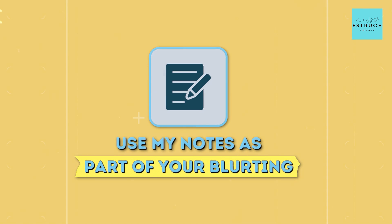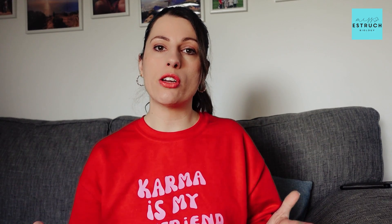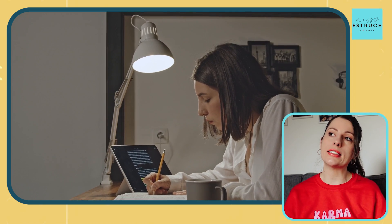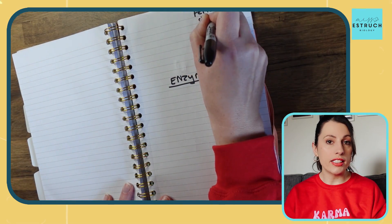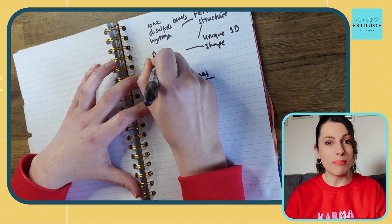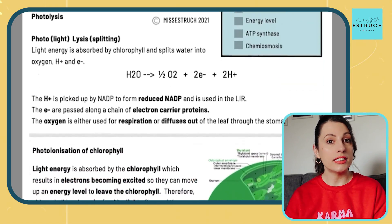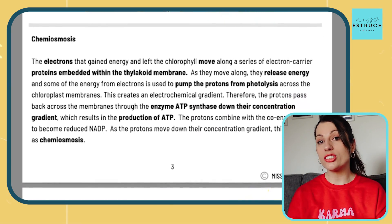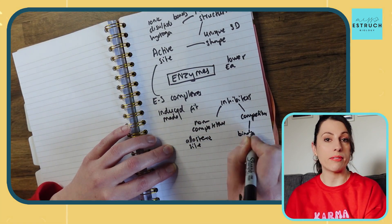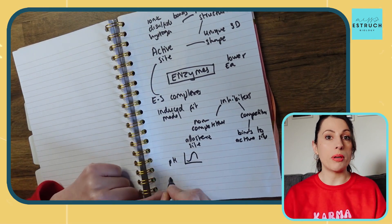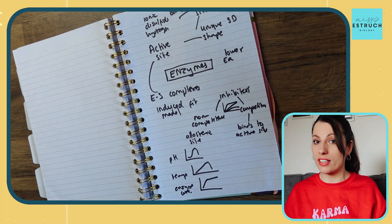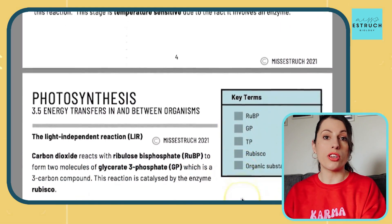Number four is to use my notes as part of your blurting. If you don't know what blurting is, it's a revision technique where you take a blank piece of paper — or your iPad or tablet — and give yourself a topic, say enzymes. You give yourself five minutes to write down or draw everything you can remember about that topic purely from memory with no aids. When the time is up, you use my A level notes to see everything you need to know on that topic, compare it to your blurt, and anything you didn't remember you add in a bright colored pen. You then repeat that same topic blurt in a week or two weeks, and the more you do it the less you forget, until eventually you should be able to remember everything. My notes help you fill in the gaps of what you forgot during blurting.